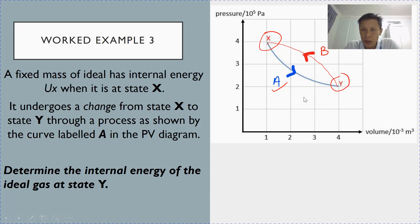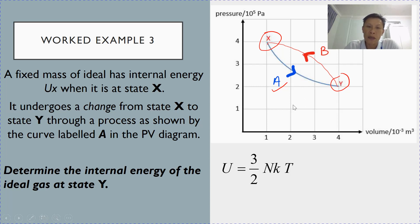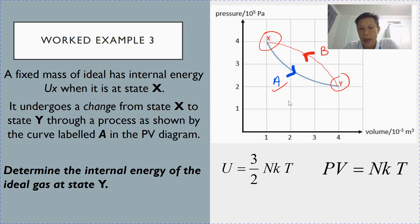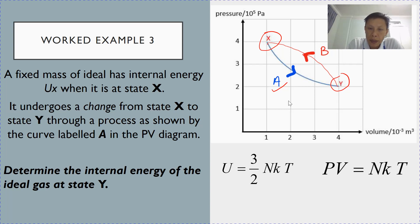How do we do this? In order to do this, we make use of the expression for internal energy of an ideal gas, which is purely KE. Therefore, the expression for internal energy for an ideal gas is 3/2 NKT. Together with the expression for ideal gas, PV is equal to NKT, we can combine these two equations.